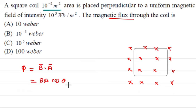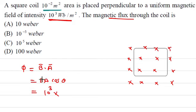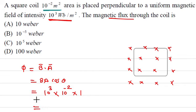The equation of flux is φ = B · A = BA cos θ. Here B is the magnetic field magnitude, A is the area, and θ is the angle between the area vector and magnetic field vector. Since the field is perpendicular to the coil, θ = 0°, so cos 0° = 1. Therefore φ = 10³ × 10⁻² × 1 = 10 Weber. So option A is the correct one.